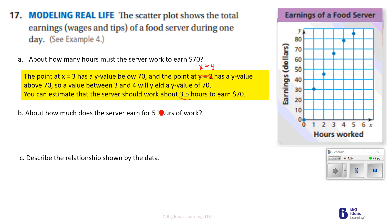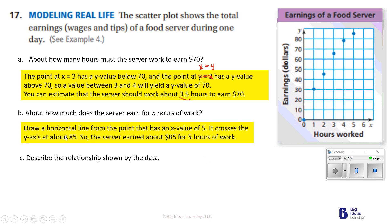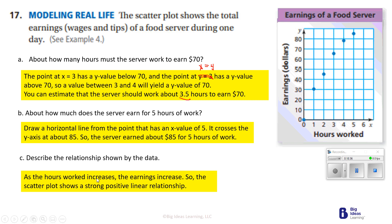About how much does the server earn after five hours of work? If this is 80 and this is 90, I would say about 85 dollars in tips. Drawing a horizontal line from the point with x = 5, it crosses the y-axis at about 85. The server earned about 85 dollars for five hours of work. Describe the relationship: as hours of work increase, earnings increase — the scatter plot shows a strong positive linear relationship.